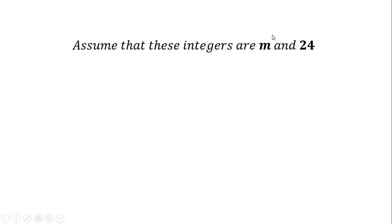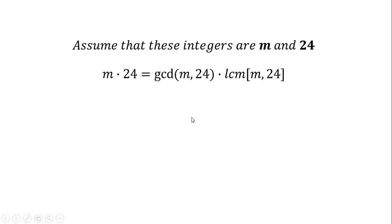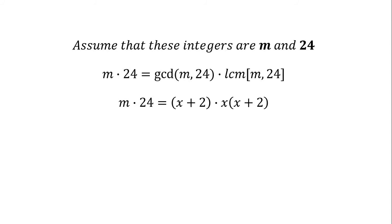It is given that one of these integers is 24. Let's say the other one is M. We know that M times 24 is equal to the GCD of these two numbers times the LCM of these two numbers. This is a very useful property in number theory: the product of two numbers equals the product of their greatest common divisor and least common multiple.